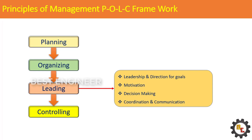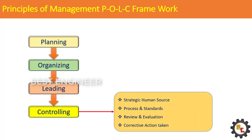Controlling involves measuring performance against goals and plans, and helping correct deviations from standards. Controlling also facilitates the accomplishment of plans by ensuring that performance does not deviate from standards. Correct strategies will be followed to control processes and methods in the correct manner. The process is also reviewed and controlled periodically, and corrective actions will be taken to alter the plan if needed.